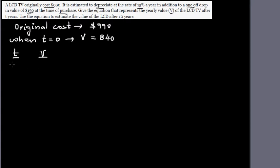The original cost is $990. Now once you buy the TV, the value drops by $150 immediately at the time of purchase. So you can see when time is 0, at the time of purchase, the value of the TV drops by $150. That's only a one-off drop. So let's say T for time and V for value. So when time is 0, when you bought the TV, the value is $840.